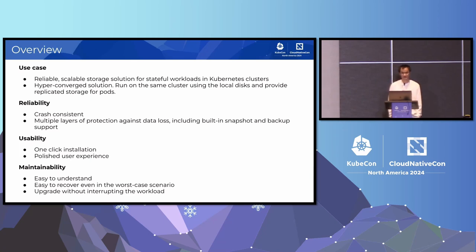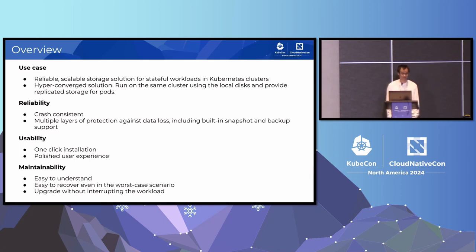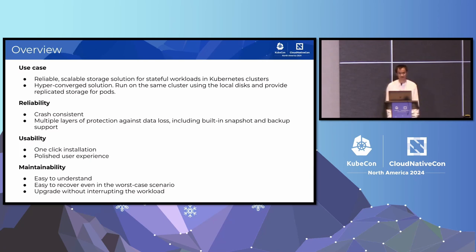Longhorn is a hyper-converged solution, meaning it runs on the same cluster as your workload. Longhorn is very reliable — it is crash-consistent and has multiple layers of protection against data loss, including built-in snapshots and external backups. One of the most noticeable features of Longhorn is that it's very easy to use. It's a one-click installation. Users can install Longhorn using kubectl, Helm, or GitOps solutions like Fleet or Flux. It is easy to maintain, easy to understand, and easy to recover from worst-case scenarios. For example, if your cluster burned down, you can recover the data from an external backup.